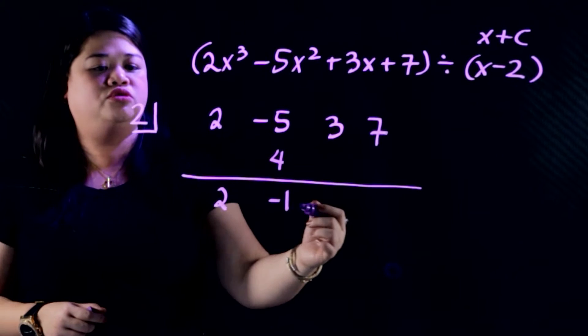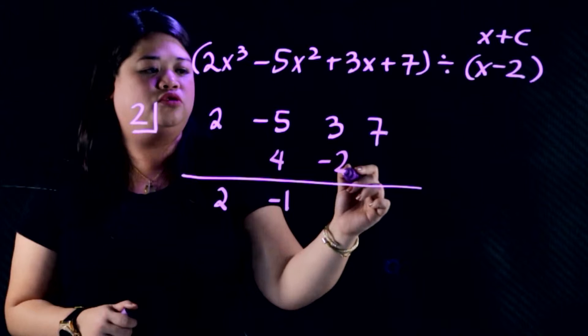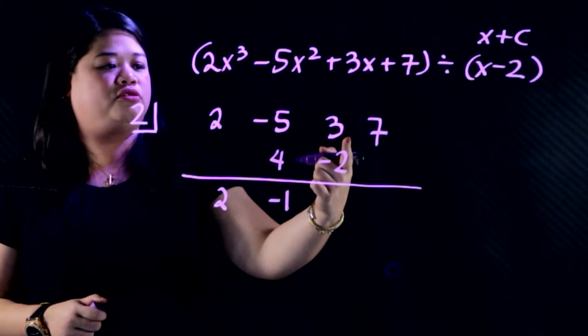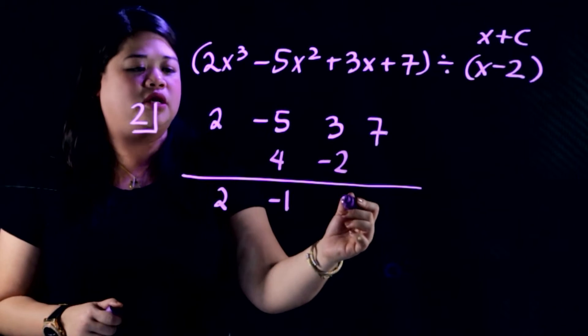Negative 1 times 2, magiging negative 2. And then add ulit, 3 minus 2, you'll get positive 1.